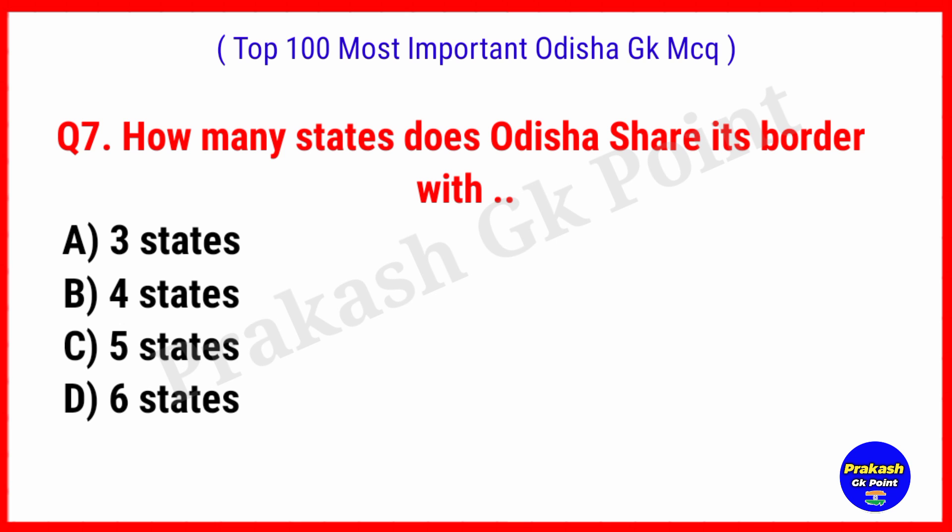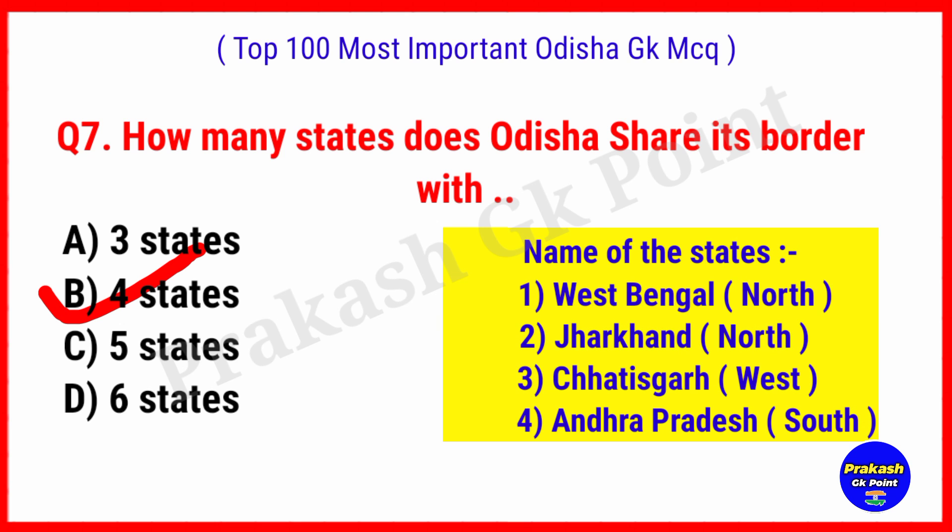How many states does Odisha share its border with? Answer: Option B, 4 states — West Bengal, Jharkhand, Chhattisgarh and Andhra Pradesh.